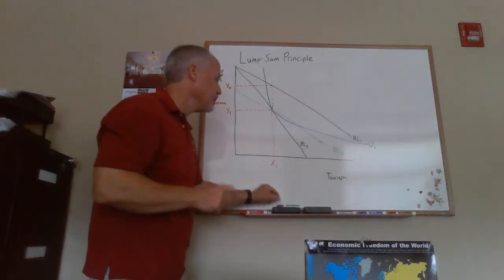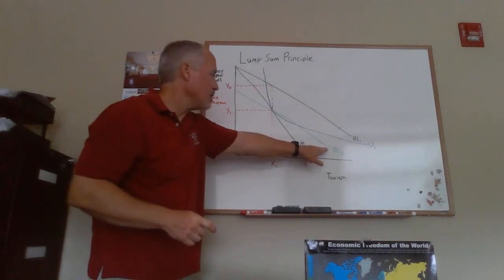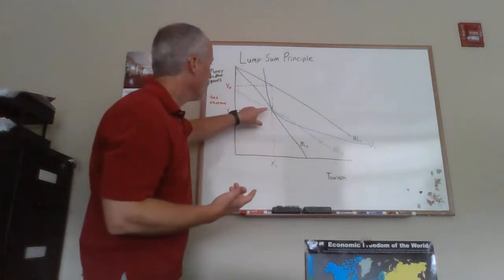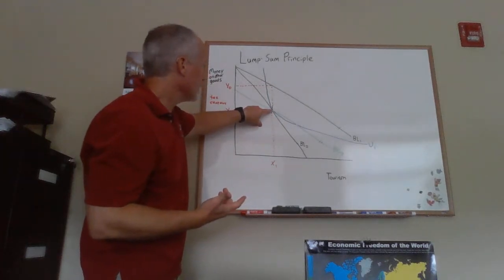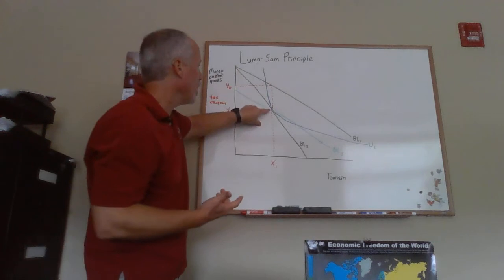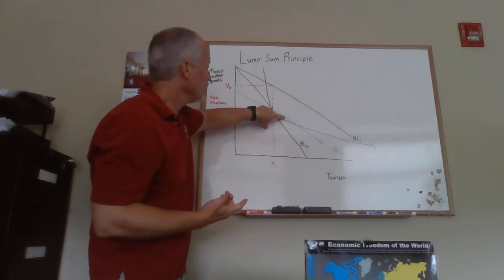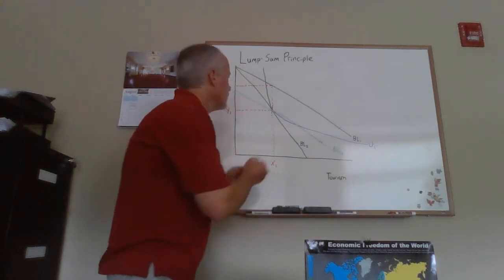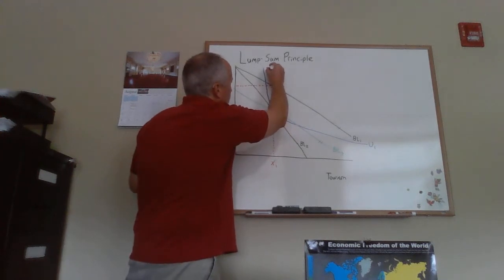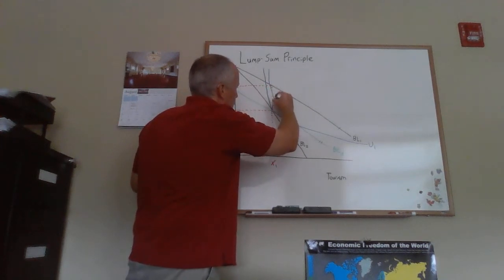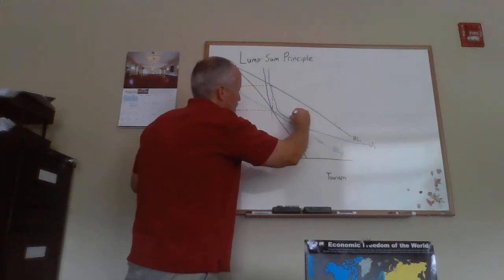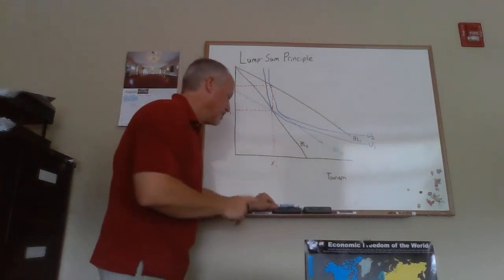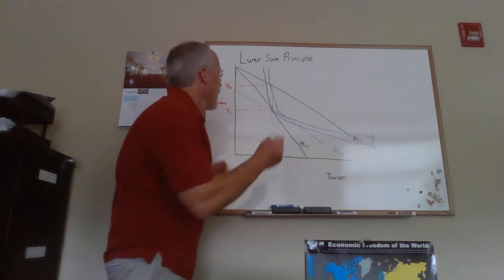Then we can say, okay, if our consumer faced budget line BL3, where would they maximize utility? What we can see is that because BL3 is flatter than the indifference curve U1 at this tangency point, the tangency point for BL3 would be somewhere over here to the right of U1. That means somewhere around here I'll draw another indifference curve in here and it's going to come in and be tangent right about there.